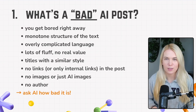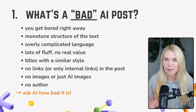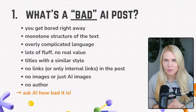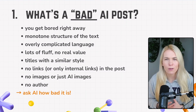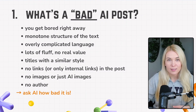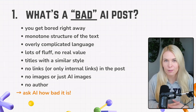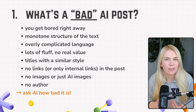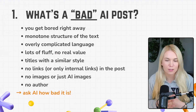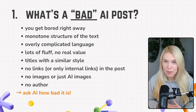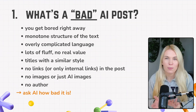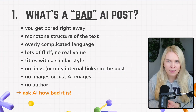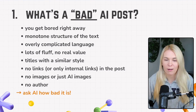So what is a bad AI post? Usually if you are using AI a lot you can tell right away something feels off — you get bored right away, you don't want to read it, the structure is really boring, it's using complicated language, and even though there's a lot of text it's mostly fluff with no real value. Also the titles often look the same and there are no links or only internal links. Another sign of bad AI posts is using AI images, which lose trust right away, or there are no images at all. And often there's also no author.